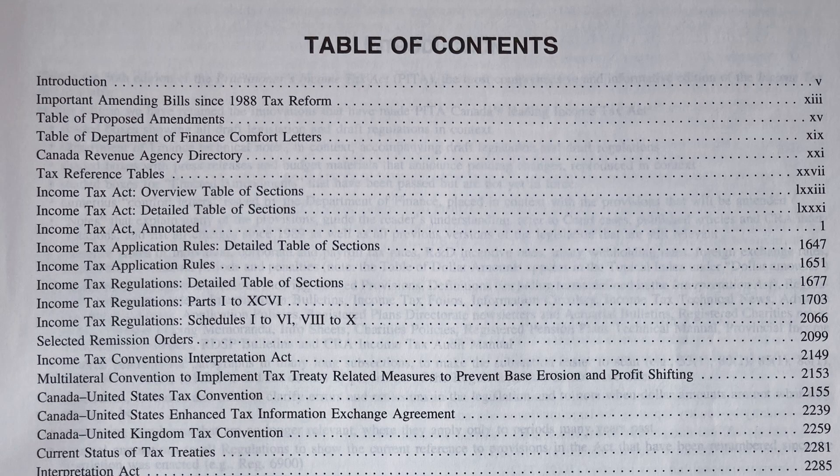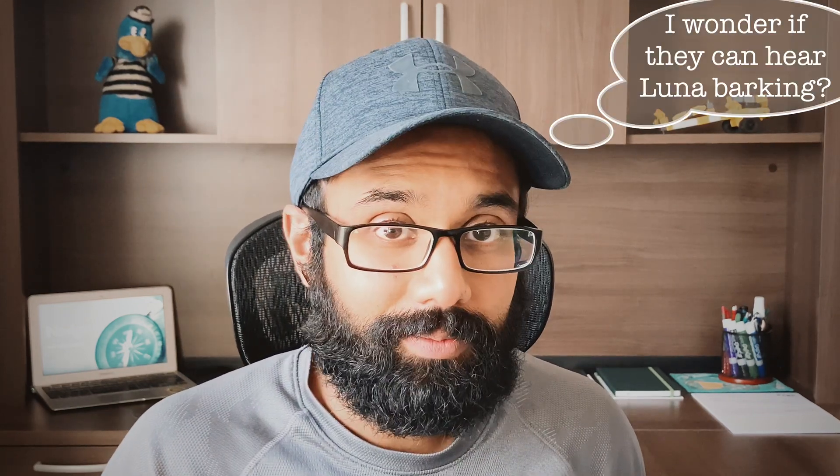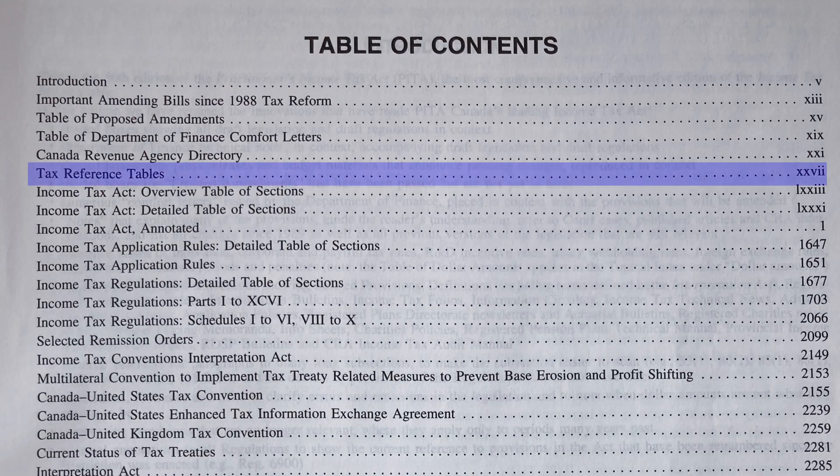That doesn't mean there isn't a table of contents in the ITA. If you open up the book and flip to the first, second, or maybe third actual page, you'll see something that actually says table of contents with page numbers in it. I want you to scroll down until it says tax reference tables. In my version of the Tax Act, it's on page XXVII — that's 27 in Roman numerals.